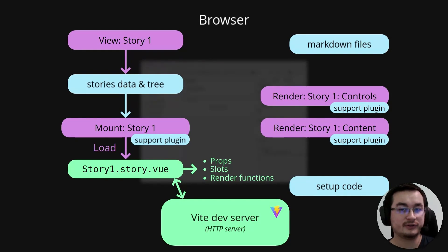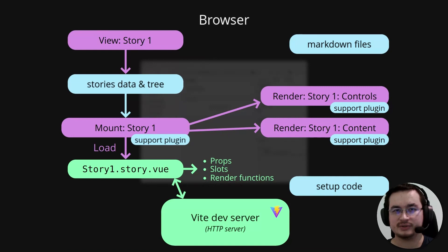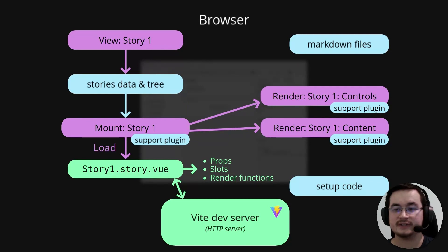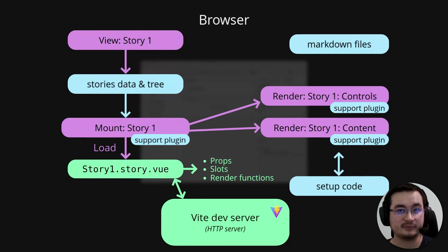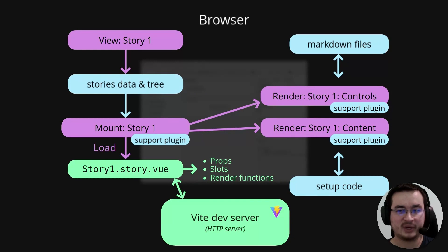Next, we have two renderers which render the content and the controls, because you can customize the controls pane for the story. The mount and the renderers use support plugins to understand your story file — in this case, the Vue 3 support plugin. Those renderers can also use setup code from virtual modules to, for example, install Vue plugins or register global components into your stories. We can also fetch the relevant markdown files to add documentation next to the controls pane for the story.